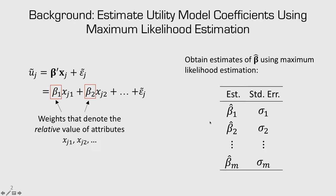These coefficients beta have units of utility. What they're telling us is whenever we change an attribute — for example, if x1 was price and beta1 was negative 0.1 — then every time we increase price our utility goes down by 0.1. That doesn't have any real direct meaning; it's kind of abstract. One thing we can do to get a more concrete, directly interpretable result is compute willingness to pay.